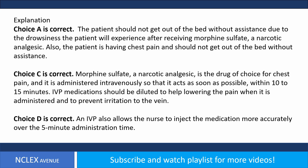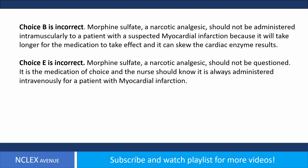Choice B is incorrect. Morphine sulfate, a narcotic analgesic, should not be administered intramuscularly to a patient with a suspected myocardial infarction because it will take longer for the medication to take effect and it can skew the cardiac enzyme results. Choice E is incorrect. Morphine sulfate, a narcotic analgesic, should not be questioned. It is the medication of choice and the nurse should know it is always administered intravenously for a patient with myocardial infarction.